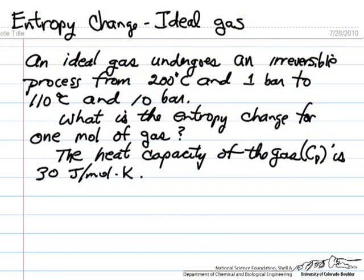In this example, we calculate the entropy change for an ideal gas that undergoes an irreversible process. Initial temperature and pressure, and a final temperature and pressure are given, but we don't know the pathway.